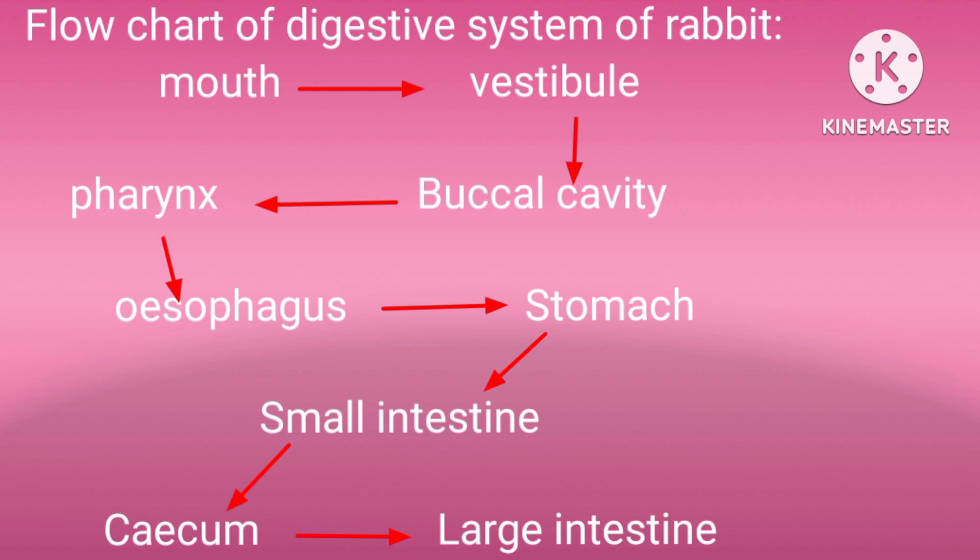The flowchart of the digestive system of rabbit has been shown here. As you can see, mouth leads to vestibule, vestibule leads to buccal cavity, buccal cavity leads to fauces, fauces leads to oesophagus, oesophagus leads to stomach, stomach leads to small intestine, small intestine leads to cecum, and cecum leads to large intestine.